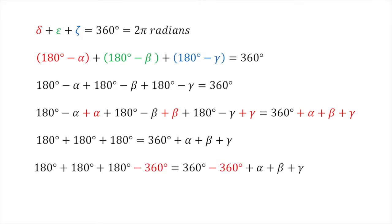Finally, subtracting 360 degrees from both sides of the equation gives us 180 degrees equals alpha plus beta plus gamma, which also equals pi radians.